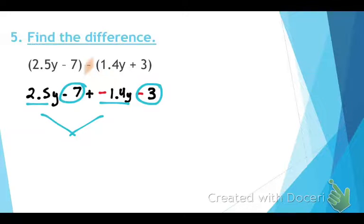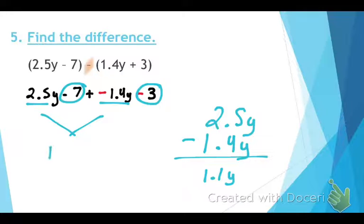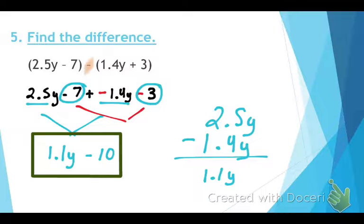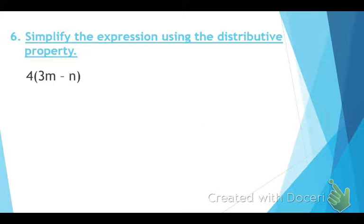Let's combine the y family first. Guys, what's 2.5y minus 1.4y? 1.1y. Very good. And then the last thing that I need to combine is the negative 7 and the negative 3. What does that equal? Negative 10. Same sign, add and keep. Add the numbers, keep the sign.